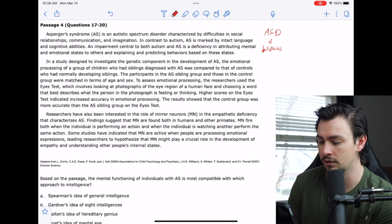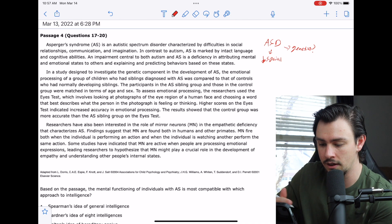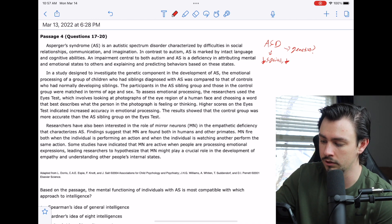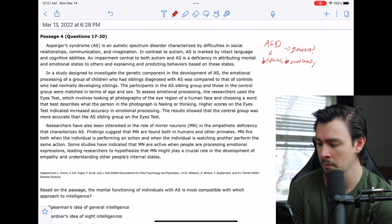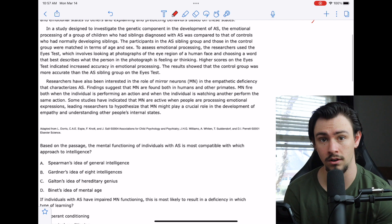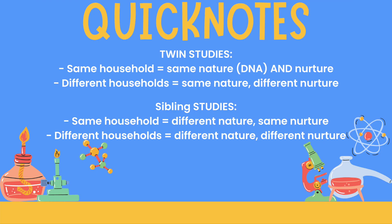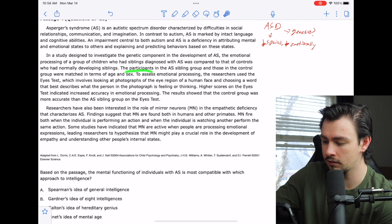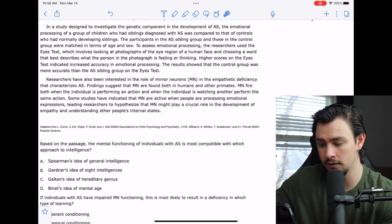In a study designed to investigate the genetic component of the development of AS, the emotional processing of a group of children who had siblings diagnosed with AS was compared to that of controls who had normally developing siblings. They're using sibling studies, which is just a way to normalize for nature versus nurture. If they're using twins, they're probably trying to normalize for genetic variability. If they're using sibling studies and they have different DNA makeups, they have the same environment, so that kind of standardizes for nurture.